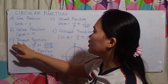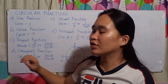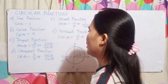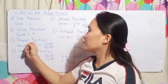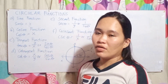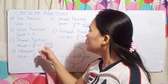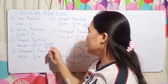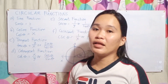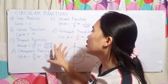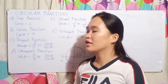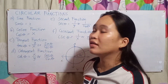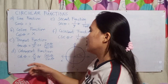Letter C, tangent function: tan theta equals y over x. You divide the value of y over x, or sin theta divided by cos theta. Since sine, cosine, and tangent are available on the calculator, you can also solve it directly using the calculator.